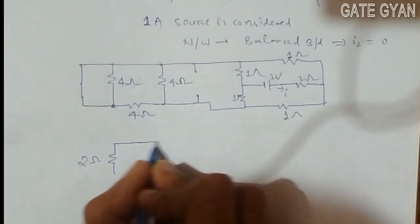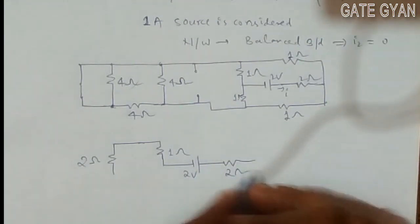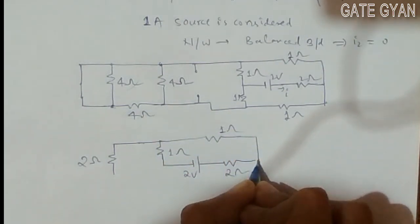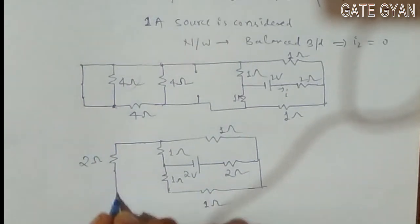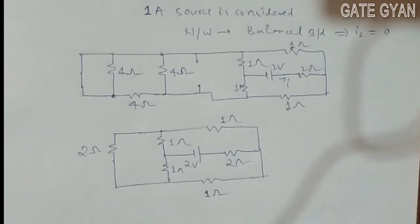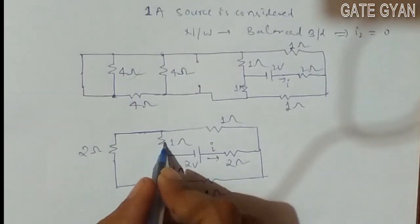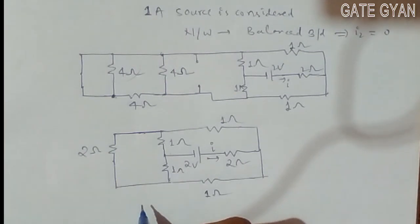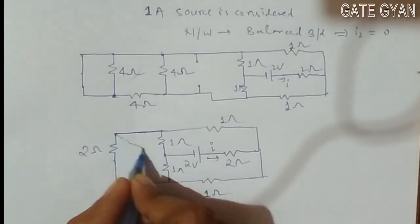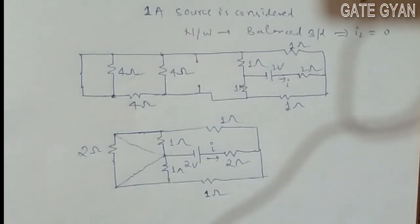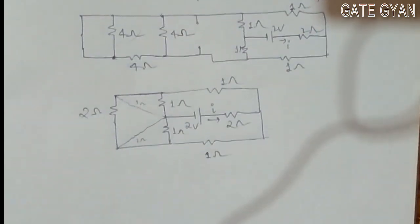So my circuit will look like: 2 ohm connected directly, here it is 1 ohm, this is 2 volt, 2 ohm, this is 1 ohm, again 1 ohm, here it is 1 ohm, and this 2 ohm is connected. Now I have to make this more simpler. This is current I which I have to find. I can observe that this 2 ohm and these 2 ohm are now in a pi network, or I can say delta form. I can connect them like this: 1 ohm, and again this 1 ohm, replacing like this 1 ohm — so it will be in a delta format.